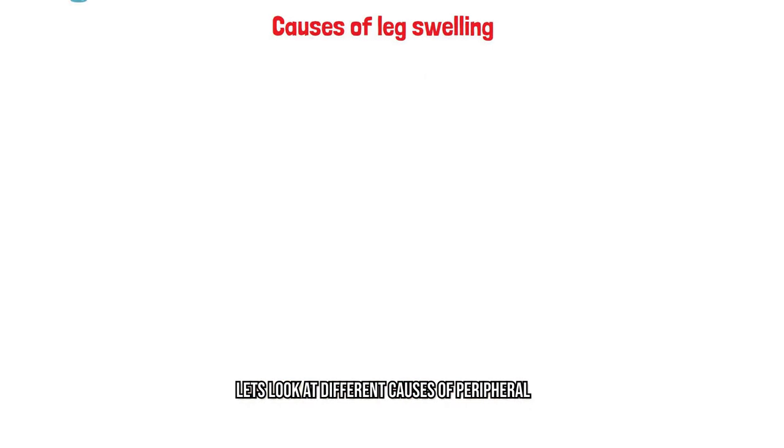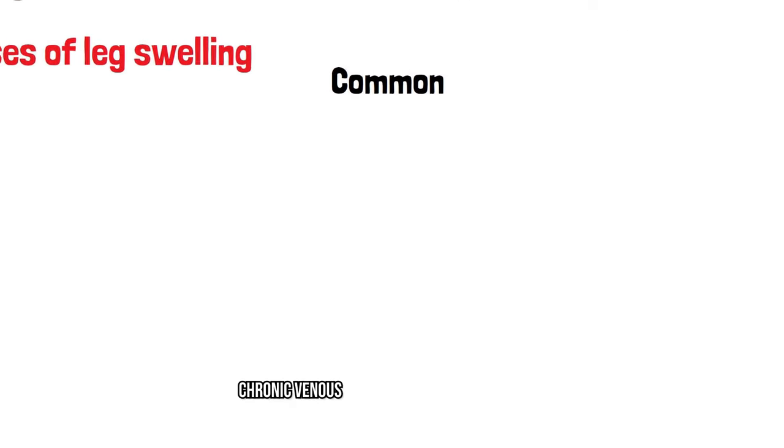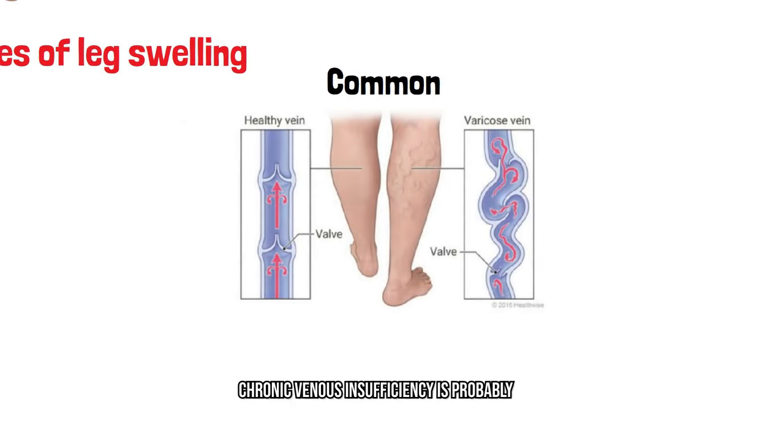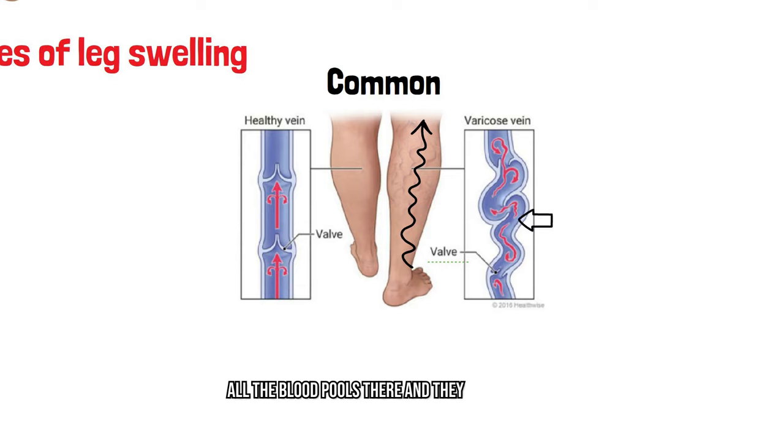Let's look at different causes of peripheral edema. First, the common and less scary ones. Chronic venous insufficiency is probably the most common. It is due to poor blood return to the heart due to bad valves in your veins. Your veins don't squeeze like arteries do, so they've got these valves that prevent backup. When they're not working, all the blood pools there and starts leaking out.